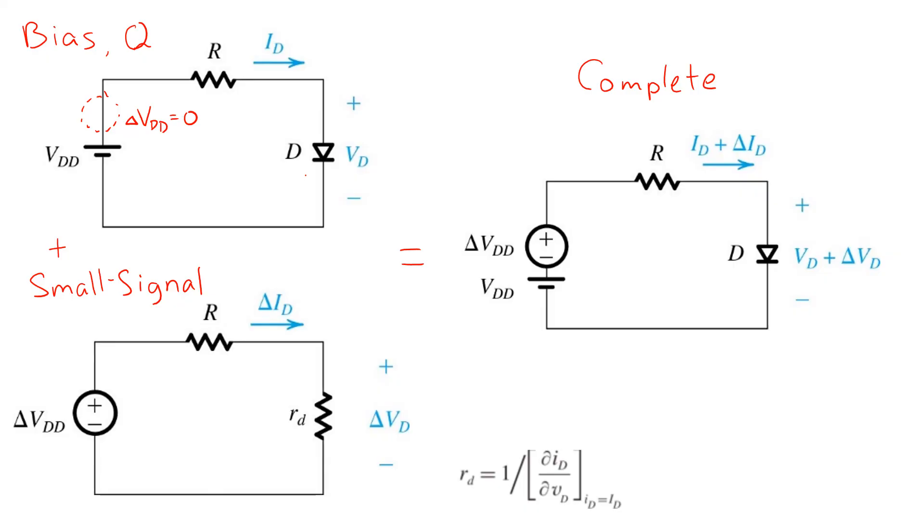But in the bottom, we've now eliminated the sort of large signal operating point quantity VDD that accounts for the bias point because we've already captured that in the analysis of the circuit on the top. So we set it to zero, that is we replace it with a short circuit and we replace the diode with its small signal equivalent resistance, RD.